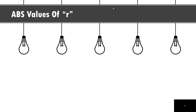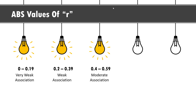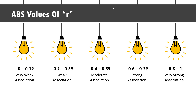Correlation coefficient also tells the strength of the association between two variables. If the absolute value of the correlation coefficient is between 0 and 0.19, it is regarded as very weak association. If the value is between 0.2 and 0.39, it is considered a weak association. If the value is between 0.4 and 0.59, it is considered moderate association. If the value lies between 0.6 and 0.79, it is a strong association. And if the value is greater than 0.8, it is a very strong association between the variables.